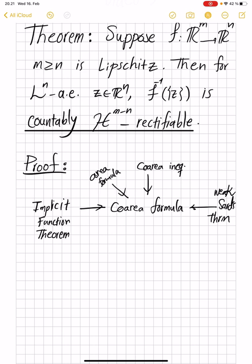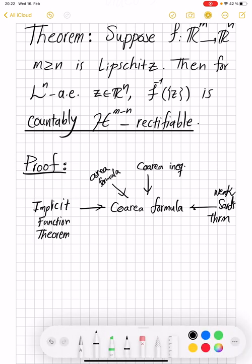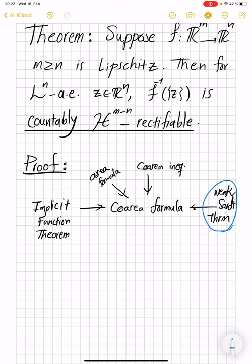So this theorem that you see on the screen for today requires only from this just weak Sard's theorem, Co-Area inequality, and the implicit function theorem. And in particular, there is no need to define the Jacobian just to prove this theorem.